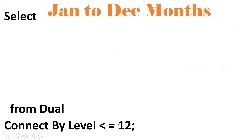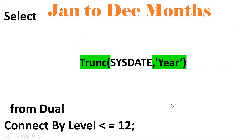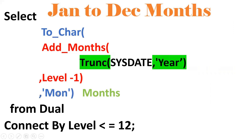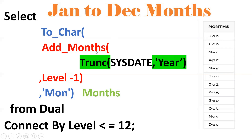One more time: from DUAL — to solve any requirement we use the DUAL table. CONNECT BY LEVEL <= 12 because January to December is 12 months, so we loop 12 times. TRUNC(SYSDATE, 'YEAR') gives January 1st, 2022. ADD_MONTHS adds one month at a time — January, February, March — up to December. We extract only the month using TO_CHAR with 'MON', giving JAN, FEB, MARCH up to DEC. Step by step we develop this to get the required output.